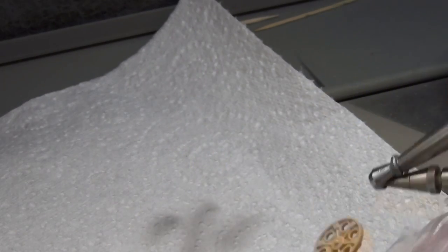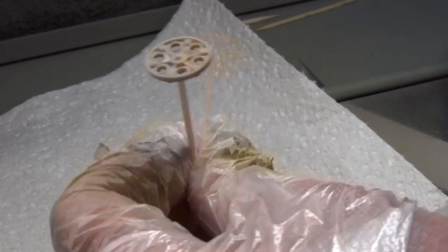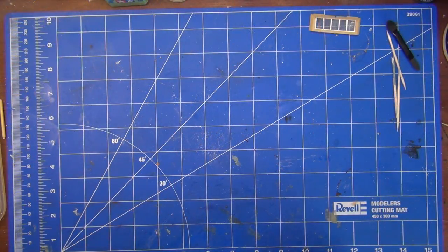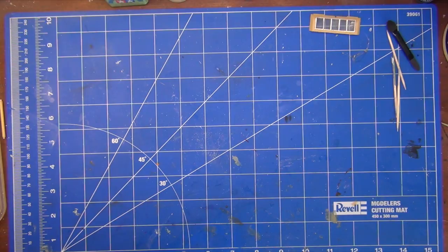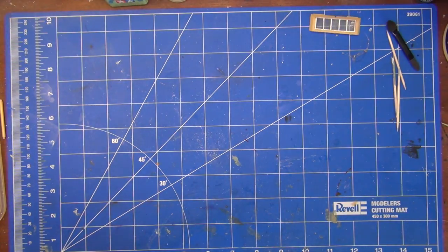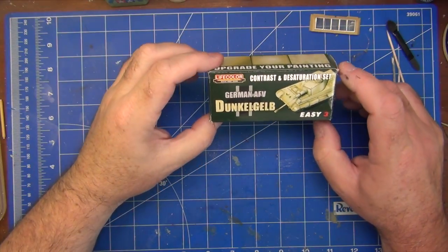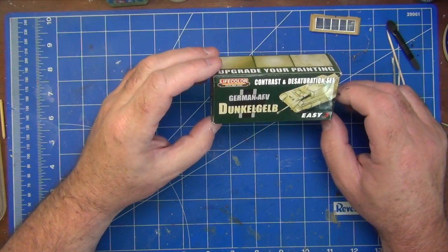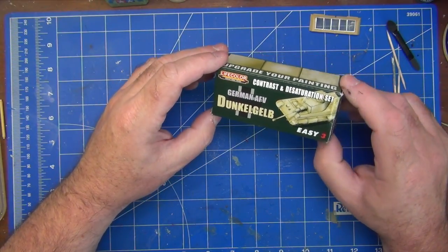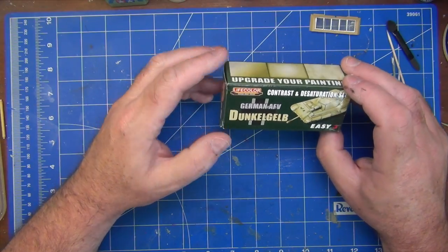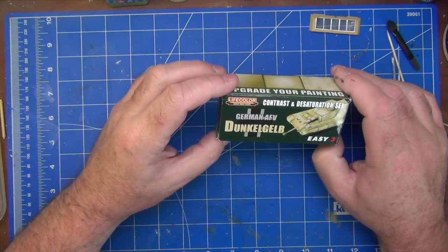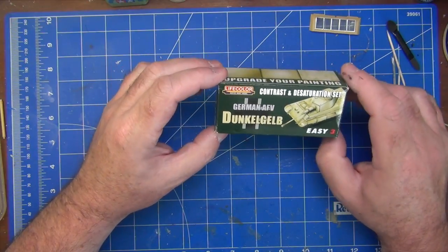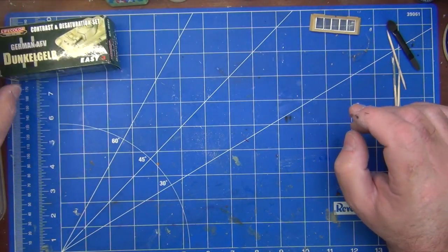I've made a start on doing the wheels. So, again, very impressed with the quality of the wheels, and that, I guess, brings me to my choice of paints for this project. I've decided to do, basically, the one that you saw on the box top a bit earlier, the yellow. So, I bought some Life Colour paint. This is the Life Colours Contrast and Desaturation Set Easy 3. German Dunkelgelb. Now, that's my Aussie pronunciation, so if you're a German, I apologise. Basically, this is their approach, Life Colour's approach, to letting you do modulation, which I've been reading a bit about lately, and I thought I'd have a crack at it with this kit, because I haven't done that before.